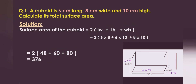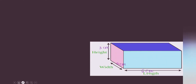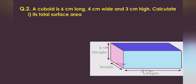Let's go to the next one. Here is another problem — pause the video and try to do it, then come back again. If you haven't done it, you can do it with me. Question number 2: a cuboid is 6 cm long, 4 cm wide, and 3 cm in height.